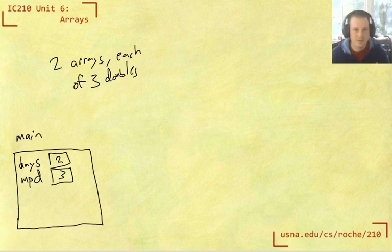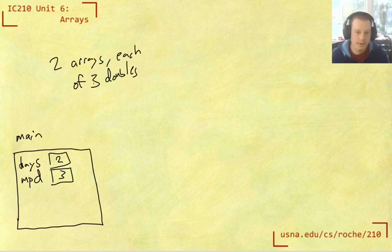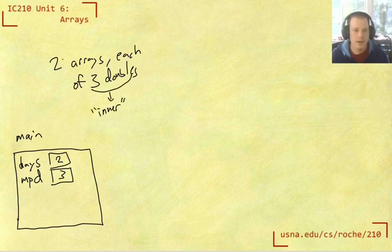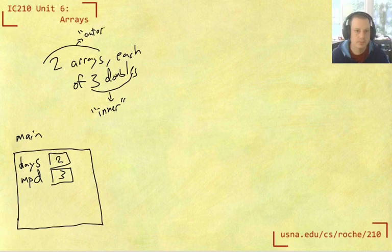So what this is, is really two levels. So we have an outer array. So the inner arrays are like the arrays for each day. So that's the inner array and the outer array is what's holding each of those inner arrays.